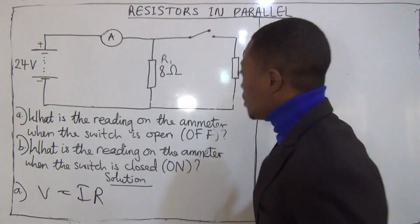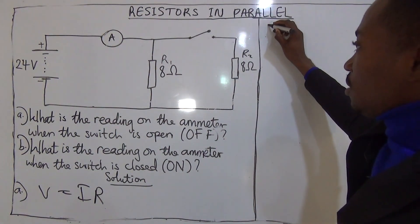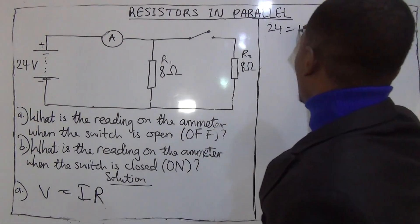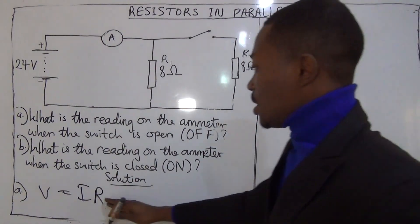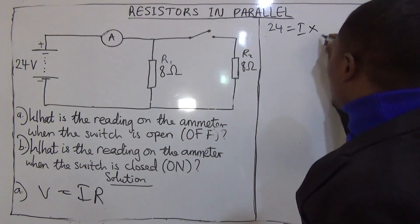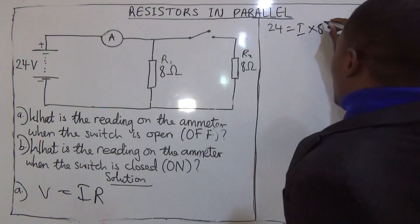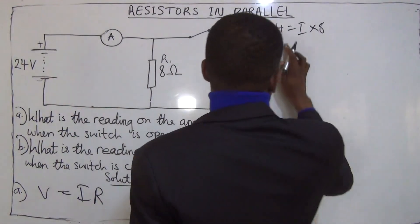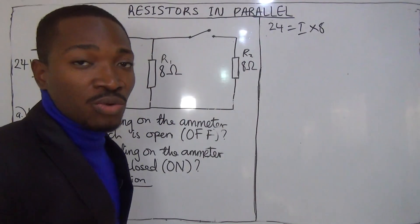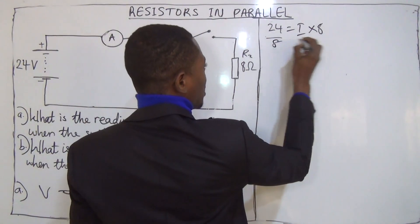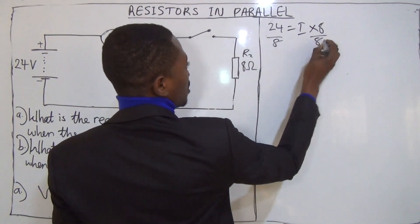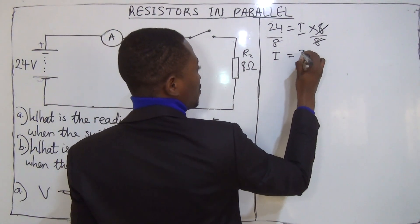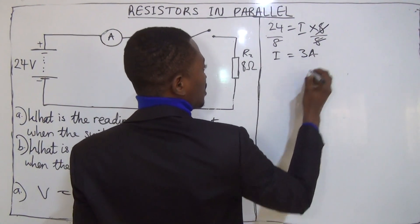Focusing on this side, my voltage is 24V. My current is unknown. The R is the resistance R1, and R1 is 8 ohms. So if 24 equals I multiplied by 8, to find I, I will divide both sides by 8. I equals 24 divided by 8, which is 3 amperes.